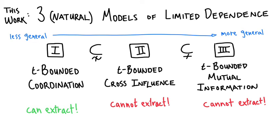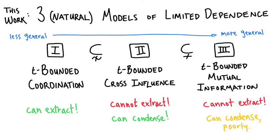This seems somewhat discouraging. However, we do show that in the second case you can condense, and you can condense quite well. Condensing means we can compress the source such that the output has very high min-entropy. And in the third model, we can still condense, but the condensers that exist are qualitatively worse than in the second case.